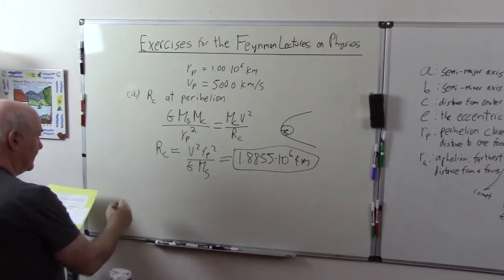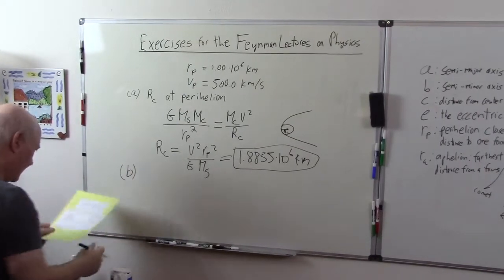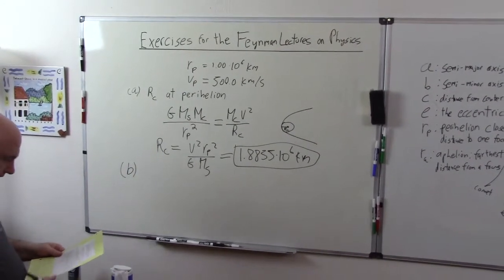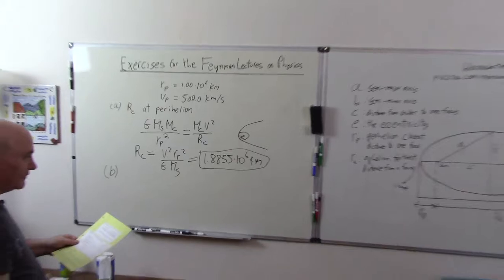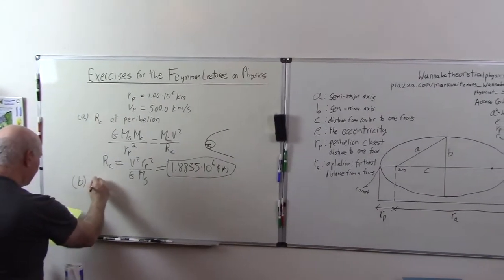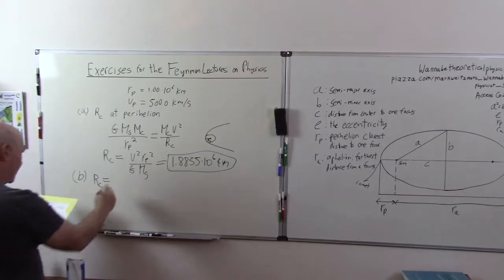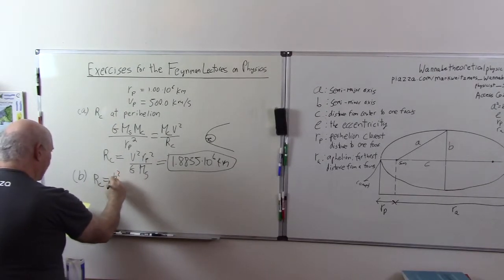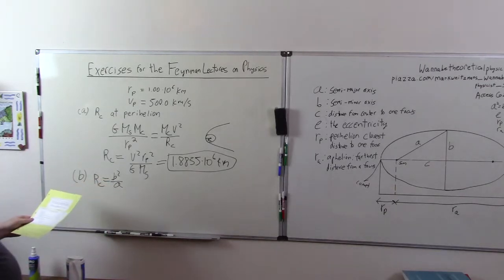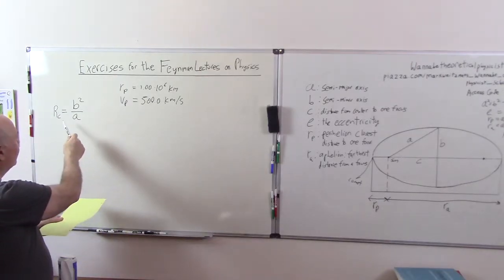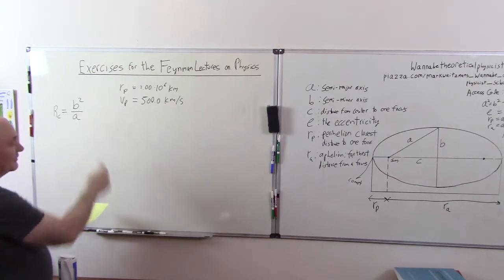Now, part B says, for an ellipse with semi-major axis A and semi-minor axis B, the radius of curvature at perhelion is, so they're actually giving you what the formula is. RC is equal to B squared over A. It says, if you know RC, which we already calculated, and RP, which we're given, you should be able to find the right relation involving A and only these quantities, do so and find A. They gave this formula for the radius of curvature at the perhelion for an ellipse is B squared over A. And I just want to quickly derive that right now.